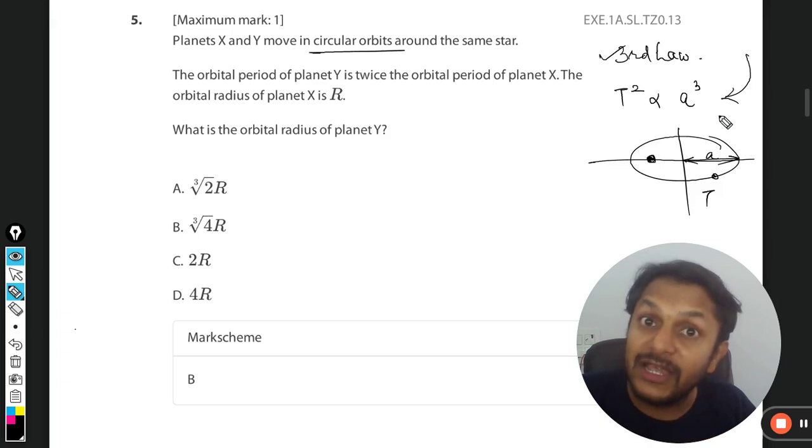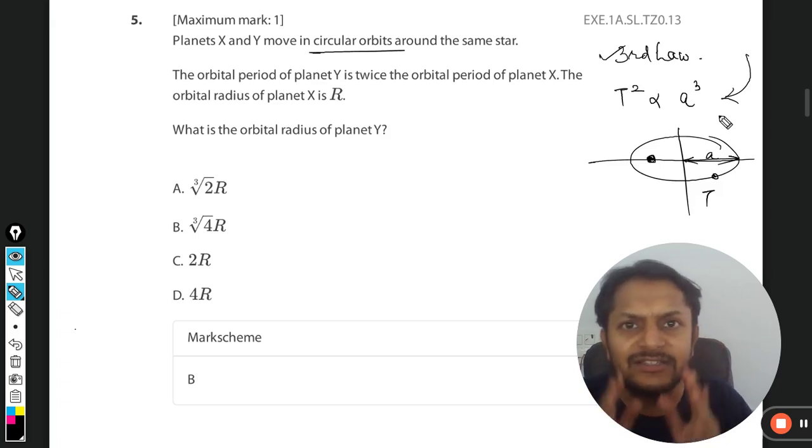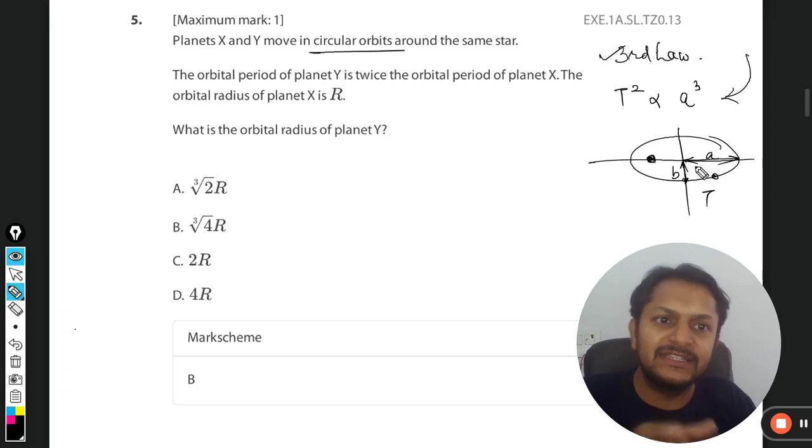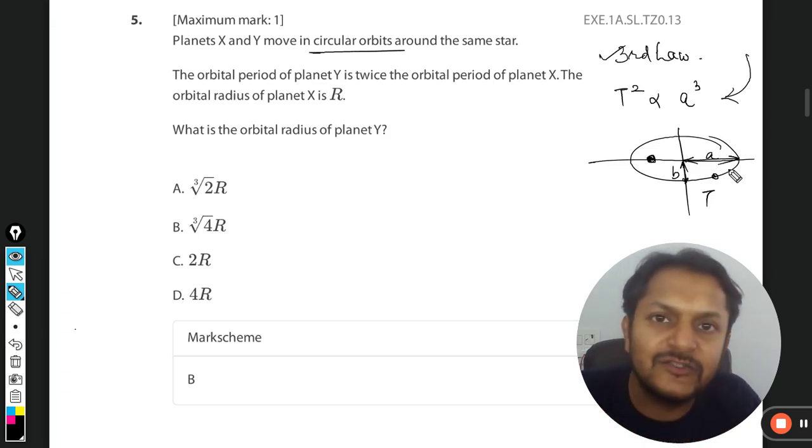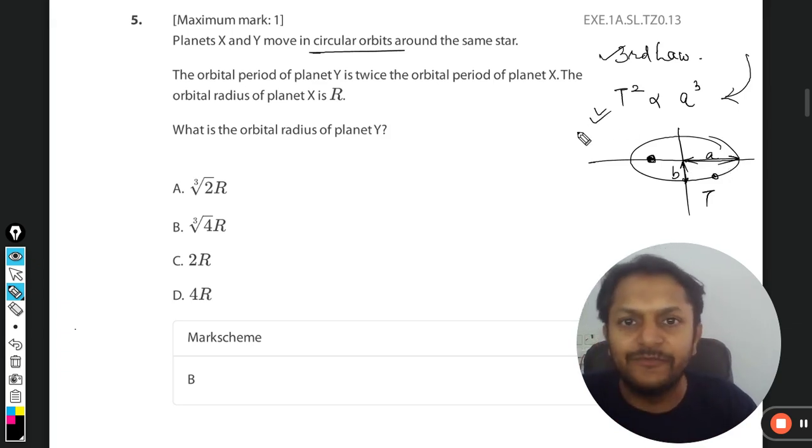So can we use Kepler's law? Well the answer is yes, of course we can use this, because the circle is just a special case of ellipse when a is equal to b. This thing is called b, the semi-minor distance. This is the semi-major distance a. So circle is a special case of ellipse when a equals b, so Kepler's law is valid even in this case.